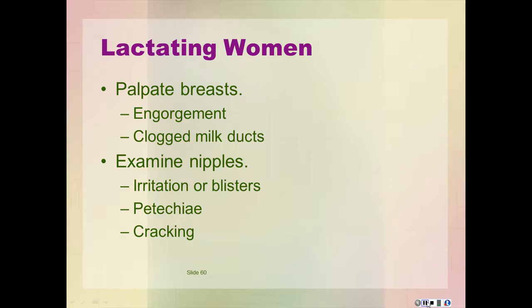Examine the nipples for signs of irritation: redness, tenderness, and even blisters or petechiae, which are precursors of overt cracking. Cracked nipples may be sore and bleeding. Nipple damage from breastfeeding is associated with placement of the nipple in the infant's mouth. After pregnancy and lactation, there is regression of most of these changes. The areola and nipples tend to retain their dark color and the breasts become less firm.